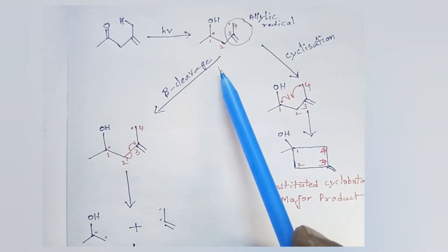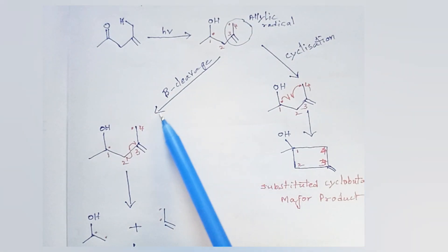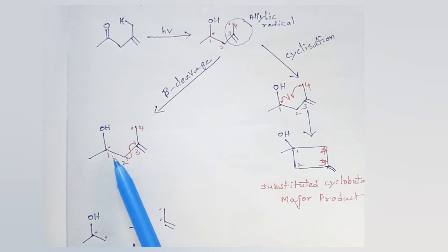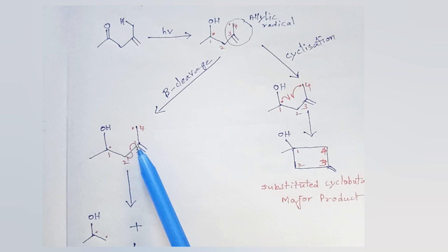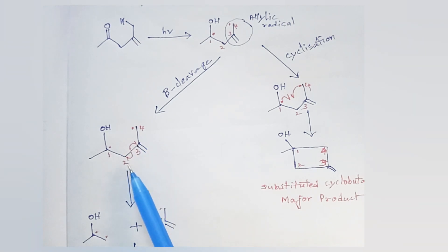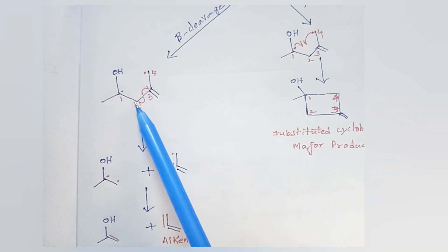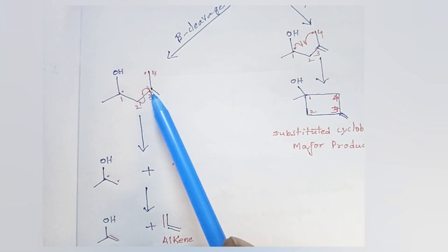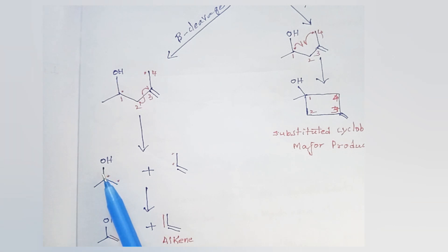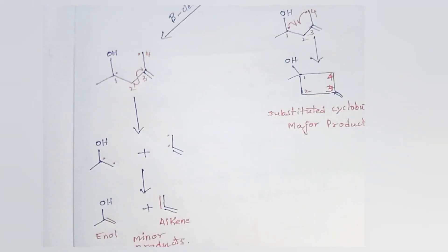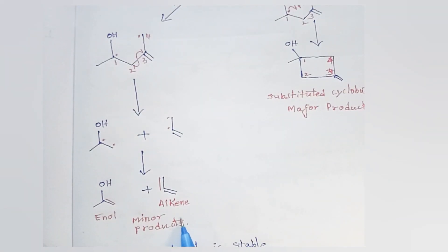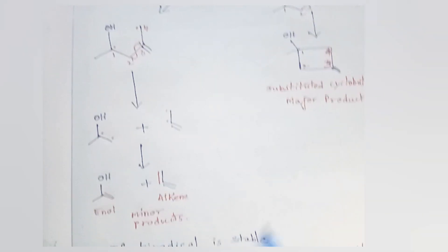At the same time, beta cleavage of this 1,4-biradical occurs. The bond between the alpha carbon and beta carbon undergoes homolytic cleavage, giving us two radicals — one on the alpha carbon and one on the beta carbon. As a result, we get an enol and an alkene. These are minor products. The major product is the substituted cyclobutanol.